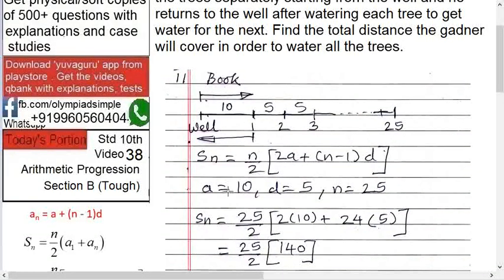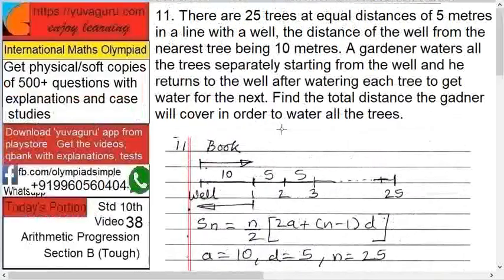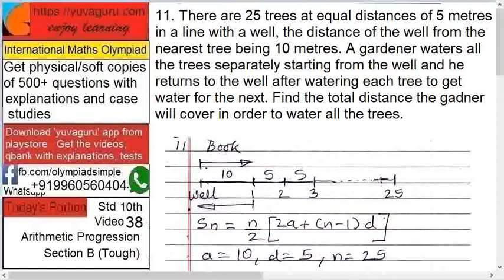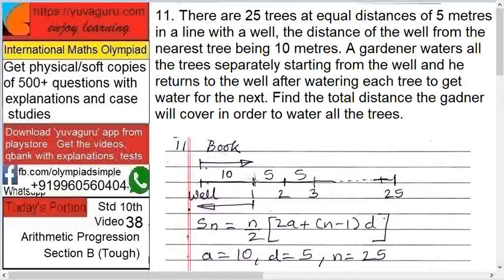Where A equals to 10. Why 10? Because here first distance is 10 and remaining are at a distance of 5 each. Right? So D equals to 5 but A equals to 10. So A equals to 10, D equals to 5, N equals to 25.